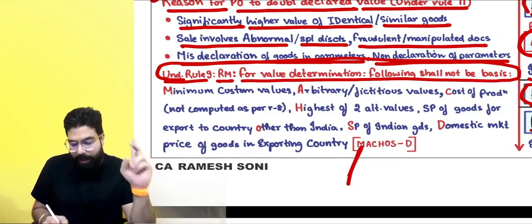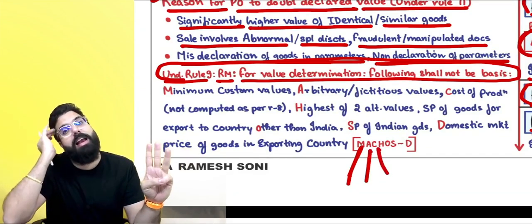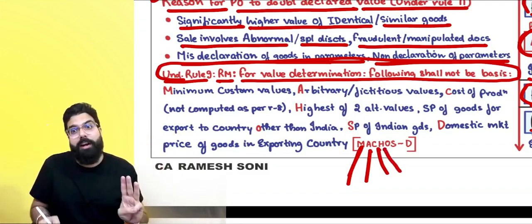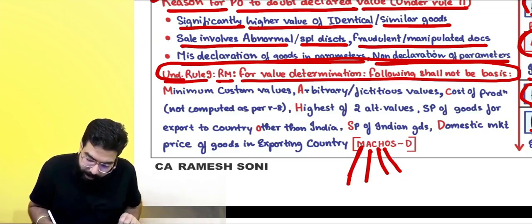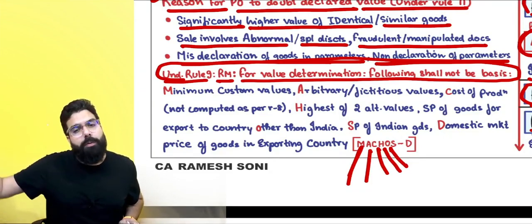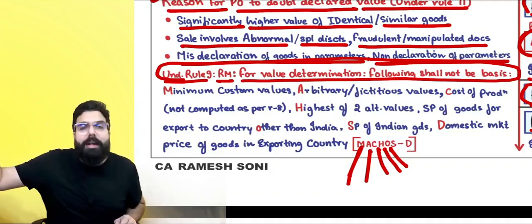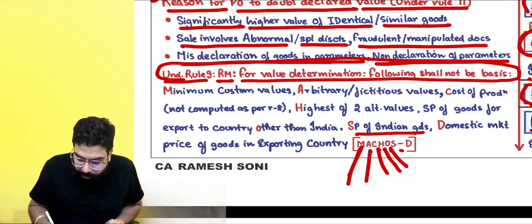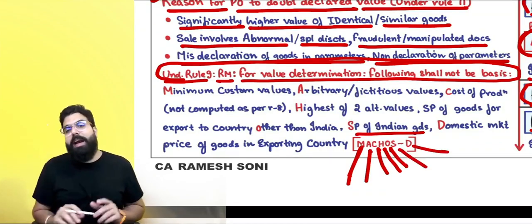However, under Rule 9 residual method, certain bases cannot be used — remember the mnemonic MACHOS D. M: minimum custom values cannot be taken. A: arbitrary or fictitious values cannot be taken. C: cost of production other than Rule 8 cannot be used. H: highest of two alternatives cannot be taken. O: selling price of goods in countries other than India cannot be used. S: selling price of Indian goods cannot be taken. D: domestic market price in the exporting country cannot be the basis.